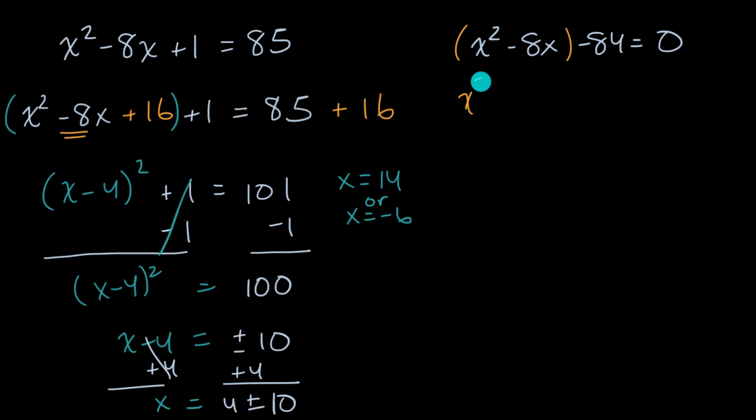If I look at this part right over there, I could say x squared minus 8x. And then once again, half of negative eight is negative four. That squared is plus 16. And then I'd have minus 84. And then if I added 16 on the left-hand side, I could either add that to the right-hand side so both sides have 16 added to it.